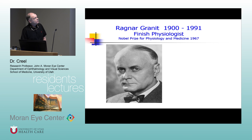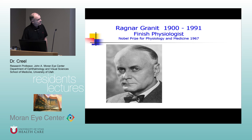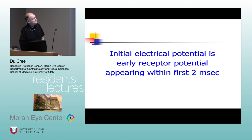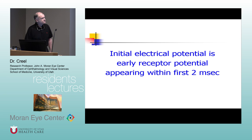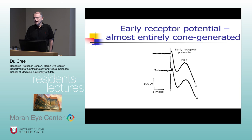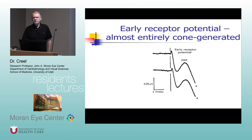Ragnar Granit won the Nobel Prize in Physiology in 1967 for isolating the different functions of the electroretinogram. The early receptor potential is a potential that appears and is over in the first two milliseconds. These are not commonly used clinically because they're not reliable and are difficult to apply. You also can't use a metal to record these because with a flash of light you get a photovoltaic effect if metal is involved in the recording from the eye.